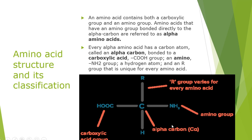Amino acids mostly occur in ionic form in biological systems. For example, in the carboxylic acid group, if the H is removed, we call it a carboxylate ion (COO⁻). And for the amino group, if we have NH₃⁺, that is the ionic form. So when we have COO⁻ and NH₃⁺ together, this ionic form is the one mostly occurring in biological systems.